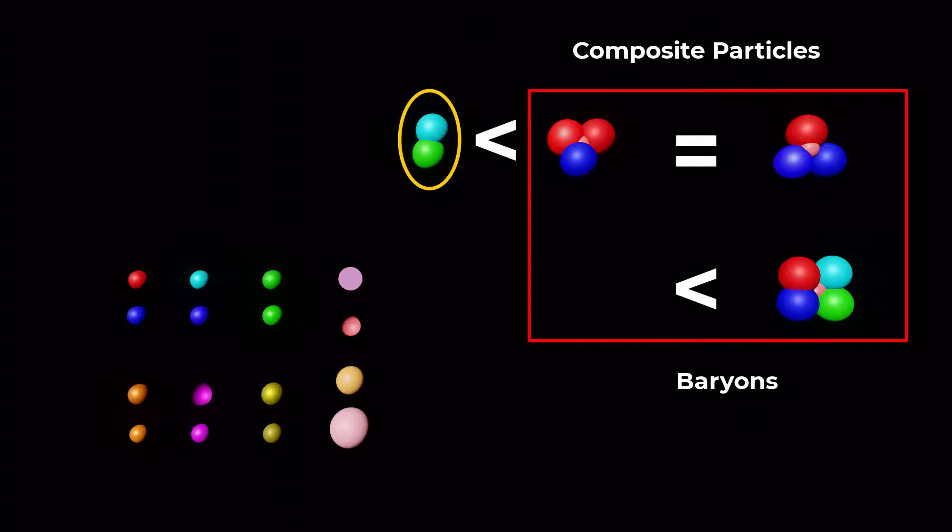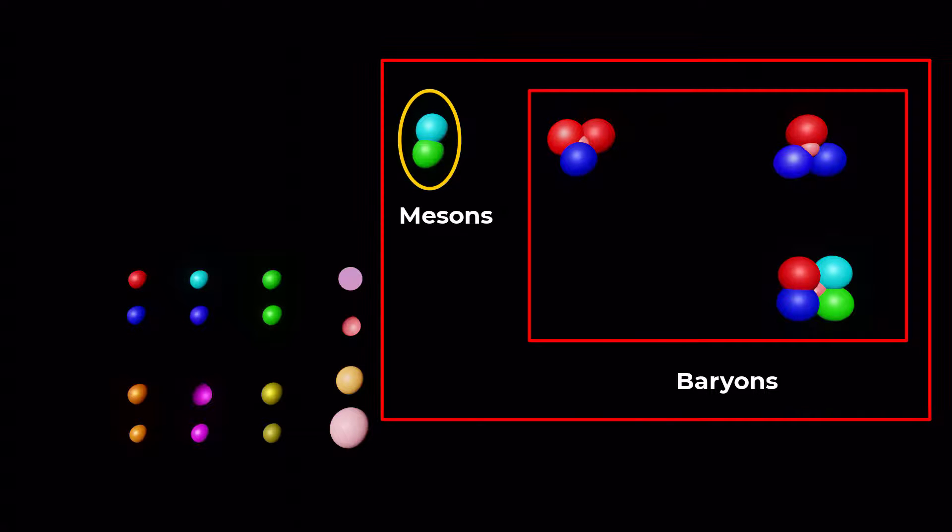Particles with masses less than that of protons are called mesons, which are made up of two quarks, a quark and anti-quark pair. Mesons and baryons are collectively known as hadrons.